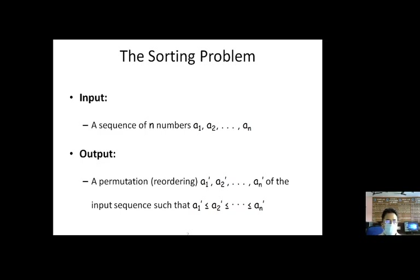Suppose there is a sequence of numbers and we want to sort this data. Then in the process of sorting, we arrange the data such that a1' is less than a2', a2' is less than a3', and so on — a(n-1)' is less than an'. Since there are a sequence of n numbers a1, a2, ..., an, there are n! possibilities of arranging these numbers, because for n positions there are n × (n-1) × (n-2) × ... = n! options.